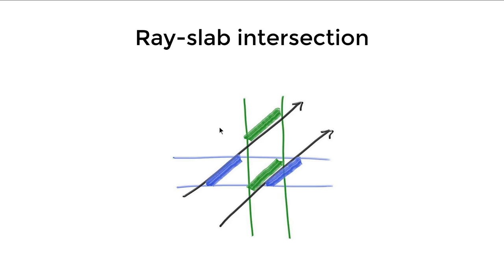The next thing is just to check whether the intersection points are in the range we want. This lower ray has intersection points that are in the range we want, so we say it intersects with the AABB. For this other ray, we get the intersection points but those points have nothing to do with the range of the axis-aligned bounding box, so for this ray - no intersection.